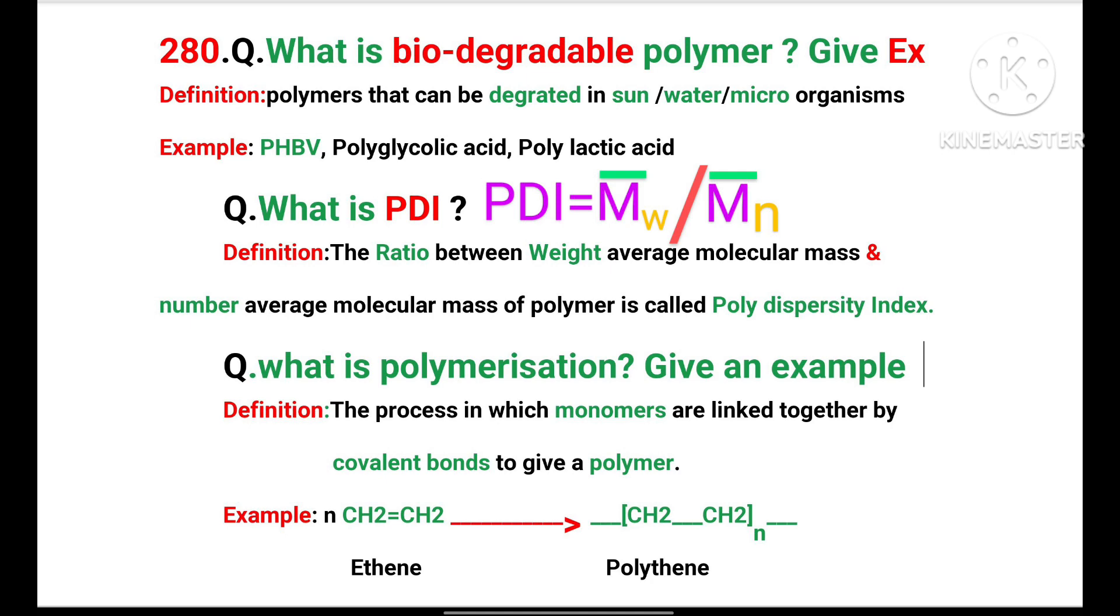N moles of ethene or ethylene undergoes polymerization to give a joined molecule called polymer polyethene.